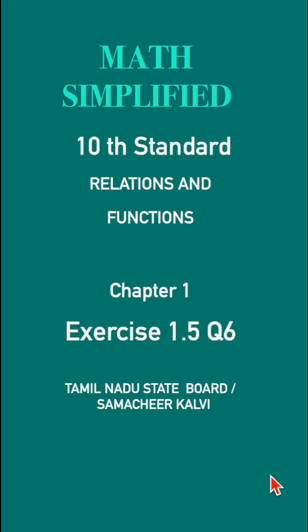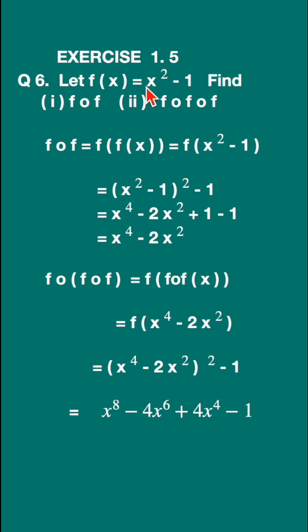Exercise 1.5, Question 6. Click here for the full exercise. Let f(x) = x² - 1. Find (i) f∘f and (ii) f∘f∘f. Okay, so let us first find f∘f, that is f of f(x).